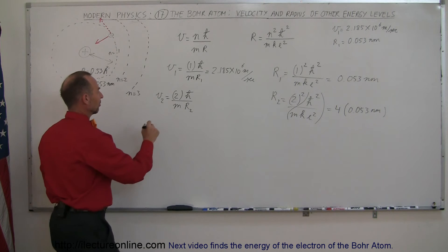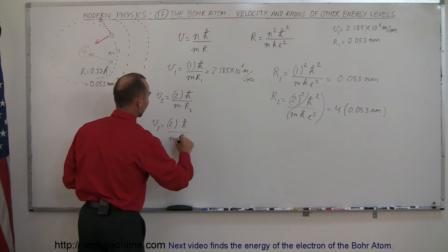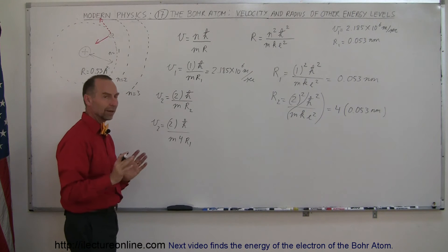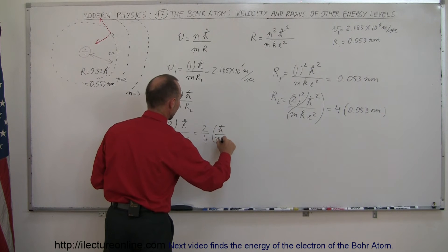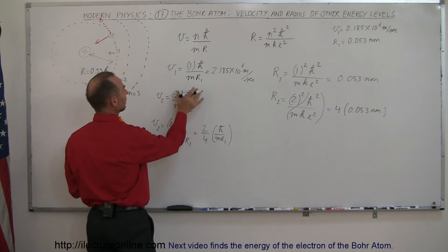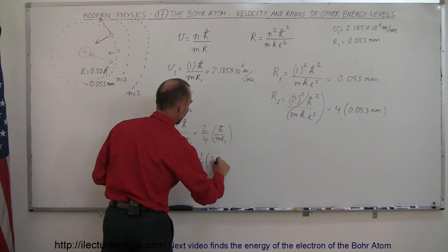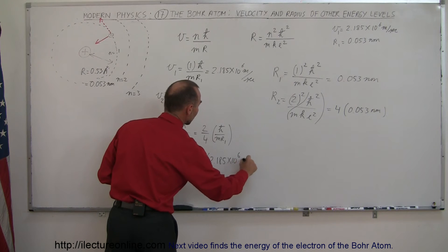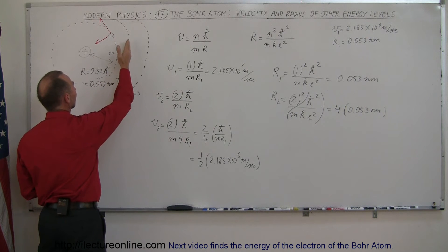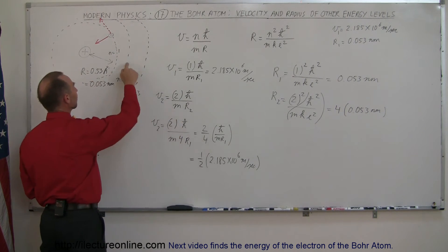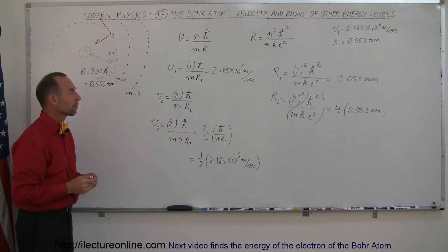Plugging that in, V2 equals 2 times ℏ over M times 4R1, which simplifies to (2/4) times ℏ over MR1. Since ℏ over MR1 equals V1, this gives V2 = (1/2) times 2.185 times 10 to the 6th meters per second. So the velocity of the electron in the second orbit is half the velocity in the first orbit, and the radius of the second orbit is 4 times the radius of the first.